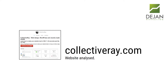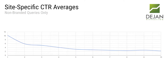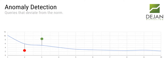We'll be analyzing its CTR, finding anomalies, and looking for ideas for CTR experiments. After processing the data in Algoroo, we found the site-specific CTR averages for CollectiveRay.com for non-branded queries only. The reason we focused on non-branded queries is because branded queries have abnormally high CTRs and we didn't want them contributing to our site averages. Knowing the site averages is the only way to detect anomalies — when something underperforms or overperforms above expectation.